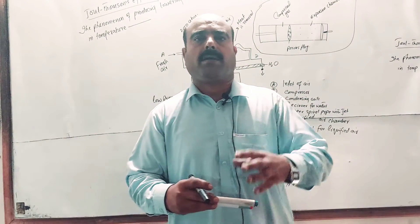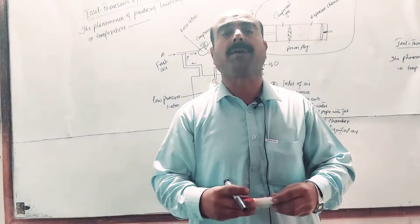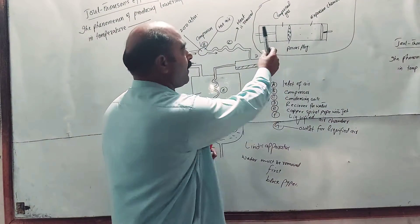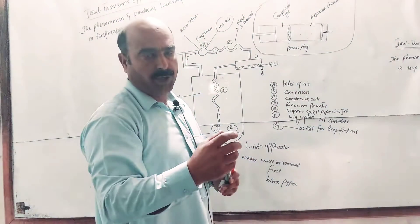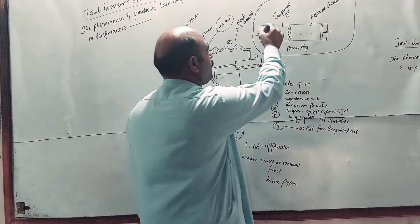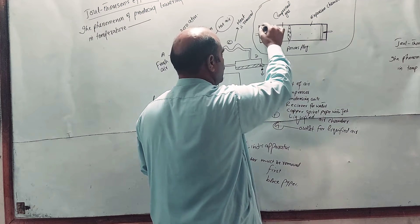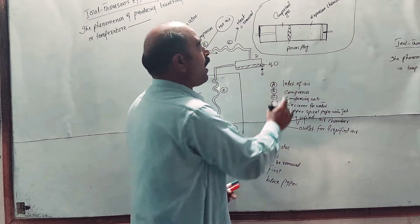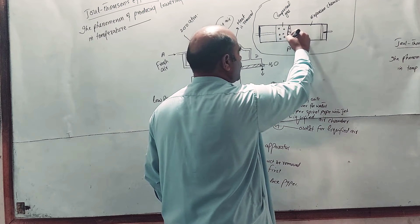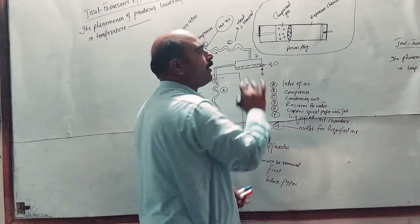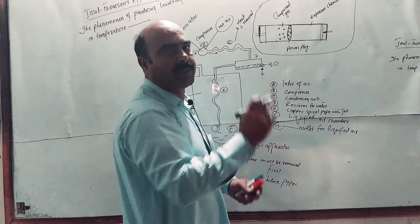Joule and Thomson conducted an experiment. In the diagram, there is a container — an insulator tube, a glass tube. Inside this glass tube, the gas is placed. In the middle there is a porous plug.